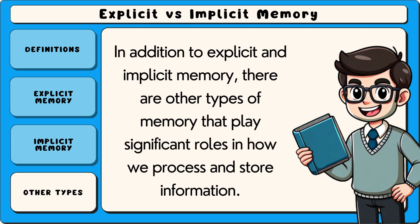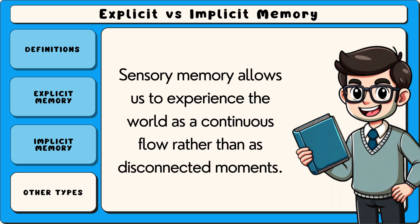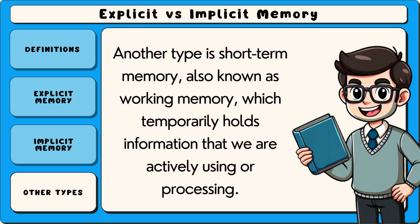In addition to explicit and implicit memory, there are other types of memory that play significant roles in how we process and store information. One of these is sensory memory, which holds information from our senses for a very brief time, often just a fraction of a second.